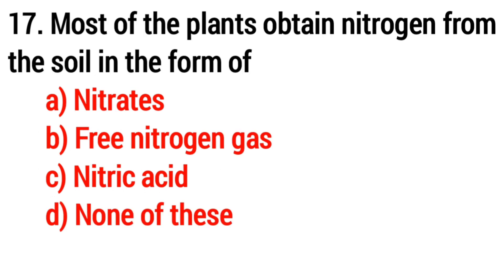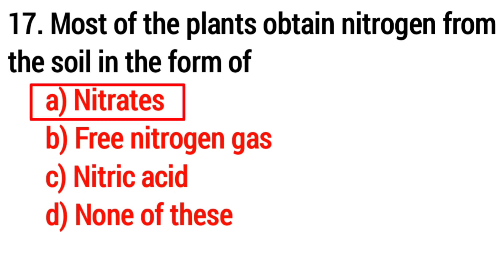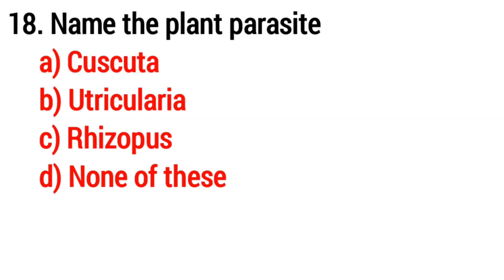Question number 17: most of the plants obtain nitrogen from the soil in the form of? Answer: option A, nitrates. Question number 18: name the plant parasite. Answer: option A, Cuscuta.